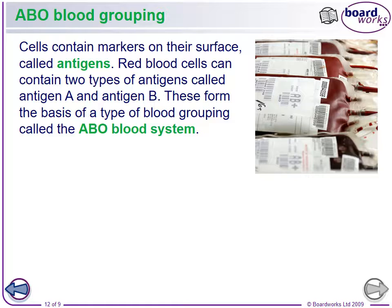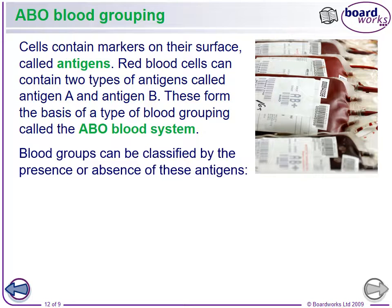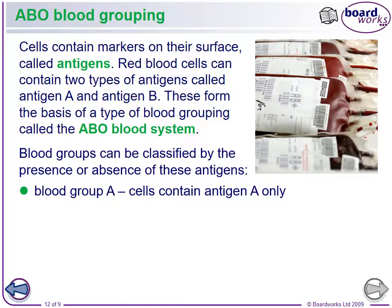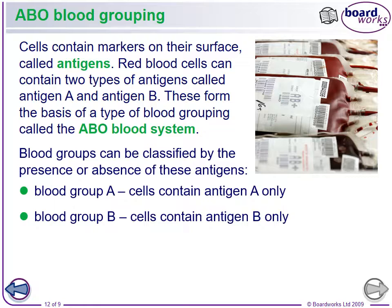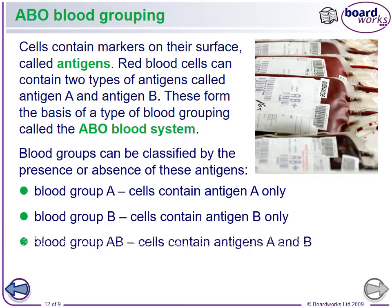Cells contain markers on their surface called antigens — antibody generators — meaning they trigger a reaction if they're not where they're supposed to be. Red blood cells contain either antigen A or antigen B, and these are the basis for the ABO blood grouping system. If they don't have either antigen A or antigen B, they're considered blood type O. Blood groups are classified by the presence or absence of these antigens.